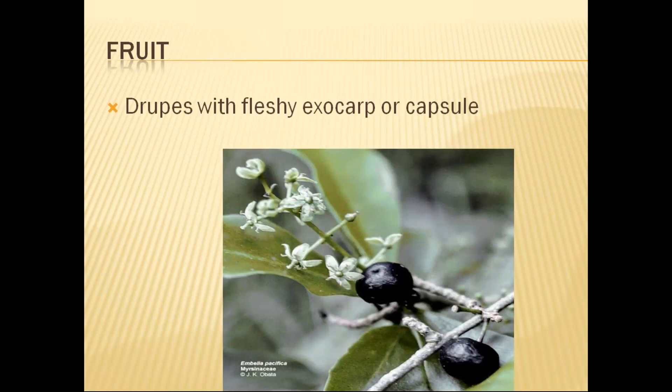The fruit is generally fleshy and it is a drupe type, because the endocarp is very hard, with a fleshy exocarp. Or it may be a capsule. Generally drupe or capsule is the main fruit type seen in this family.